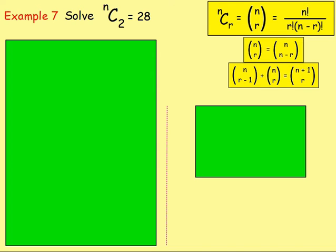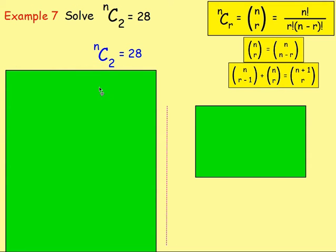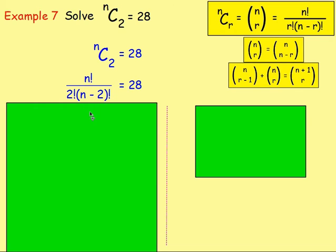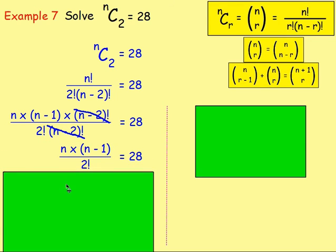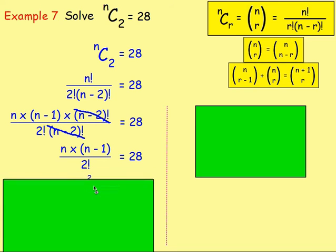Example seven: solve n choose 2 equals 28. Again we are not given n but we know n choose 2 equals 28. Using the formula gives n factorial over two factorial times (n minus 2) factorial. Writing n factorial as n times (n minus 1) times (n minus 2) factorial and cancelling (n minus 2) factorial leaves n times (n minus 1) on top and two factorial on the bottom, still equal to 28.